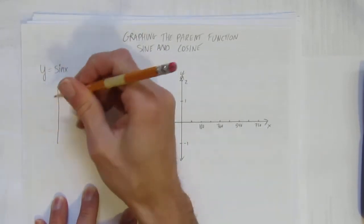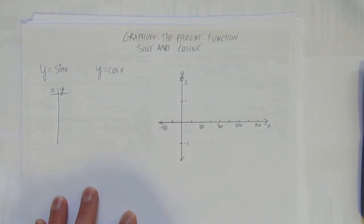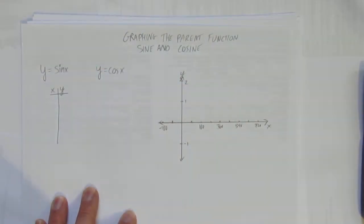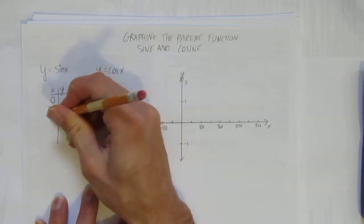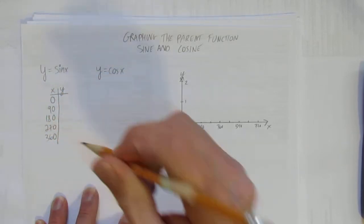Let's make a table of values for it. Unlike our normal table values, we're not going to pick 0, 1, 2, 3. We're going to make nice values to put on our graph. Those values are 0 degrees, 90 degrees, 180 degrees, 270 degrees, and 360 degrees.